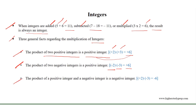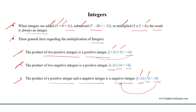The product of a positive integer and a negative integer is a negative integer. If we consider a positive integer plus 2 and a negative integer minus 3, then we get plus 2 times minus 3 is equal to minus 6, which is a negative integer.